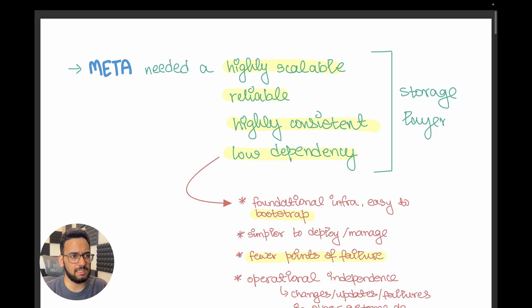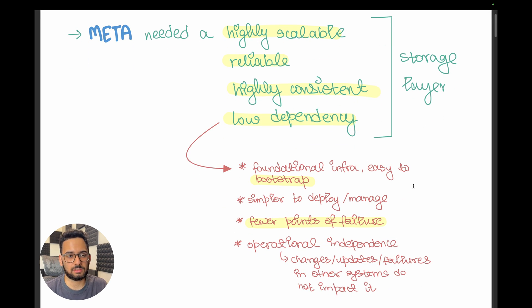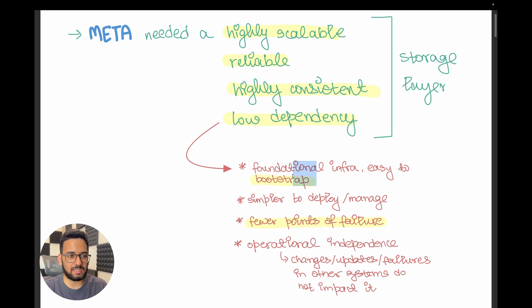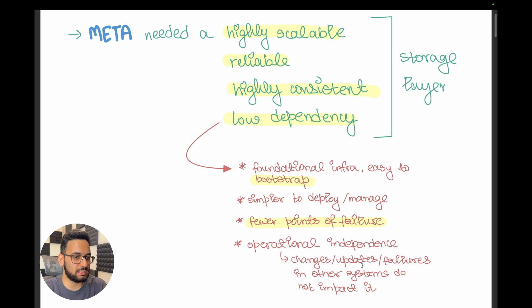While you might be familiar with the first three requirements, low dependency might be new to you. Whenever you're building foundational infrastructure, you need it to depend on as few external factors as possible — it should not depend on too many external services or things outside the purview of that one particular system. This makes it easier to bootstrap the service in case of a widespread outage, and they are simpler to deploy and manage. There's also a lesser chance of the main service failing due to changes or updates to the systems it depends upon.